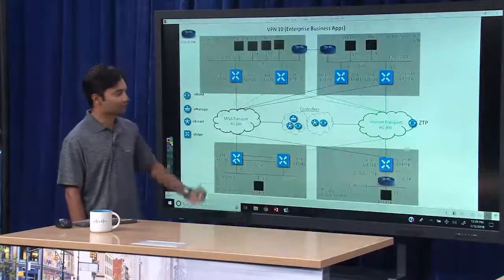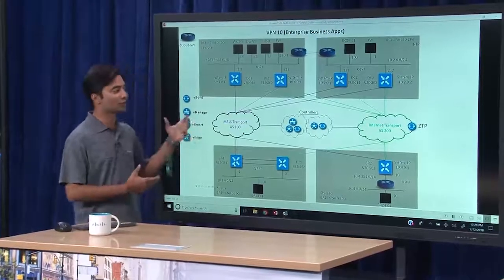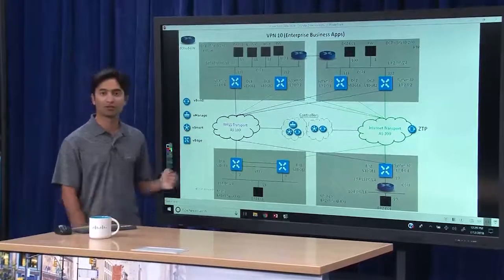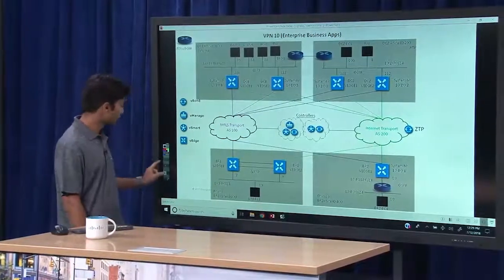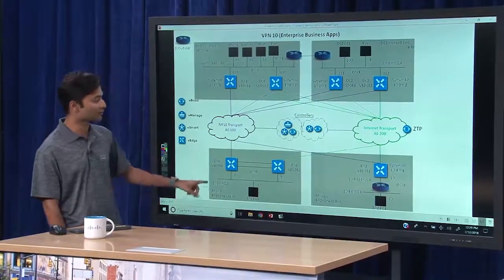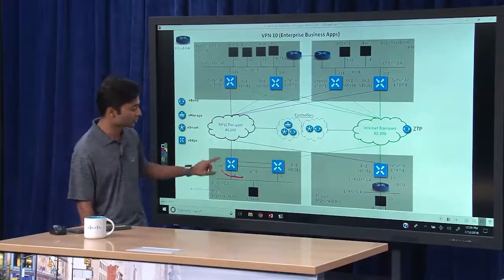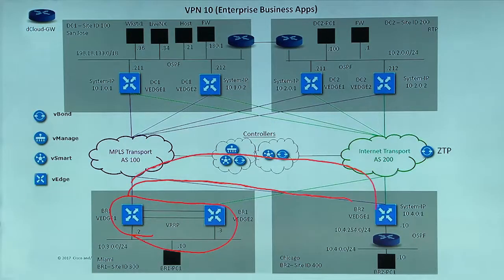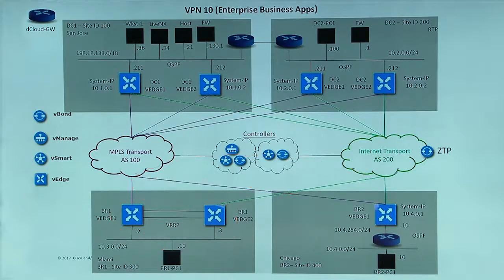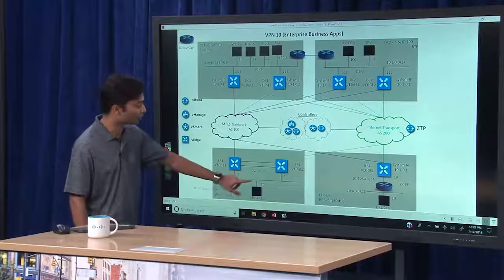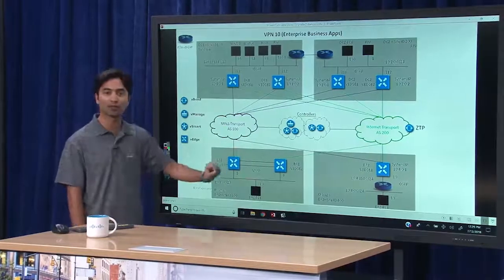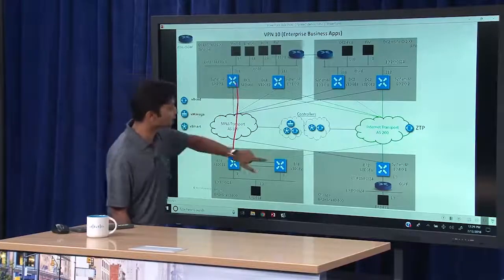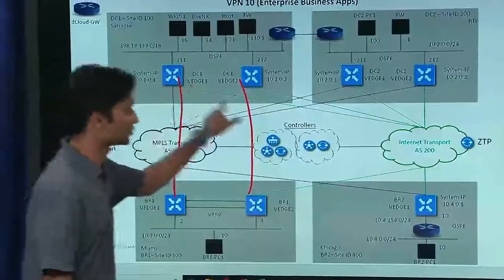What we want to look at today is changing the topology using policies. By default, this environment is currently set up such that the vEdges in Branch 1 are able to directly communicate to Branch 2 over both possible paths. What we want to convert this into is a setup where Branch 1, when it needs to communicate to Branch 2, will have to go to the data center in order to do so.